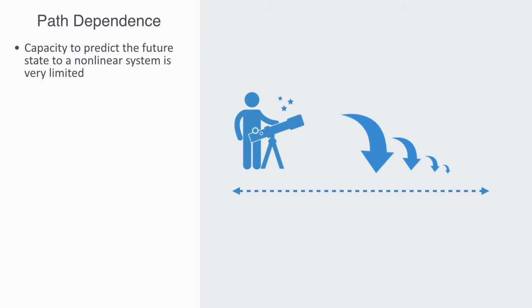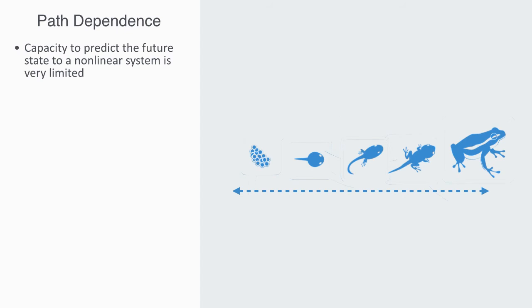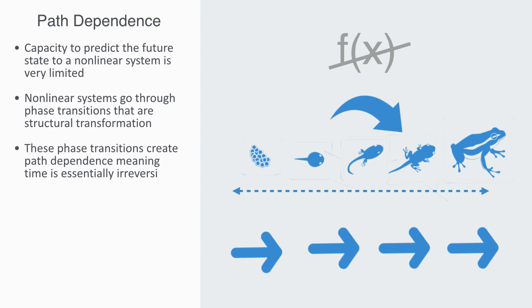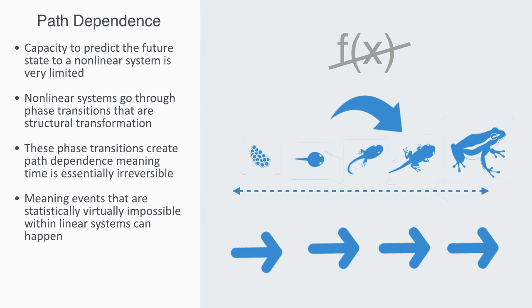We won't go into the details here, but non-linear systems, go through phase transitions. These phase transitions, are structural transformations. Meaning, a sample from the system's state space, prior to the phase transition, and after, will not be comparable. This means, it is highly unlikely, that there will be some closed form function, that maps between the variables within each state space. These phase transitions, create path dependency. Meaning, time is essentially irreversible. Non-linear systems, also have non-normal probability distributions. Meaning, events that are statistically virtually impossible, within linear systems can happen. What are called black swans.